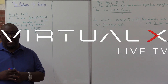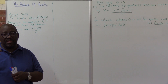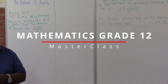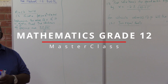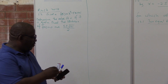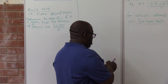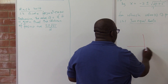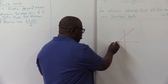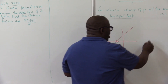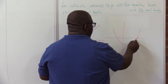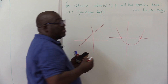We look at this part called the nature of roots. What are roots first? Roots are the x-intercepts. For example, if we've got a straight line graph, this part where it crosses is called the root, the x-intercept. If we've got a parabola, these two crossing points are called the roots, the x-intercepts.